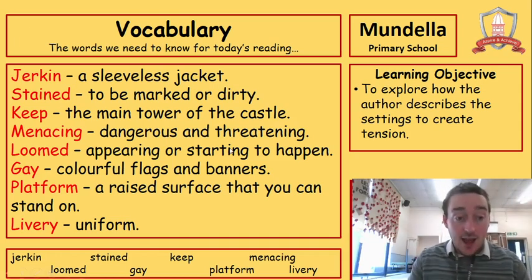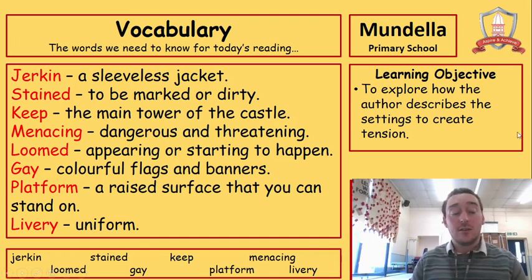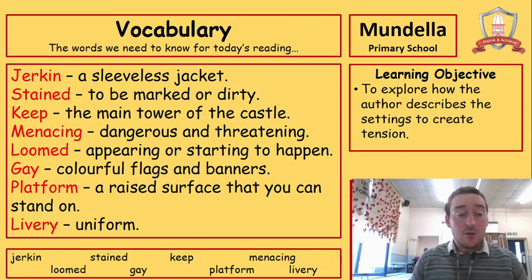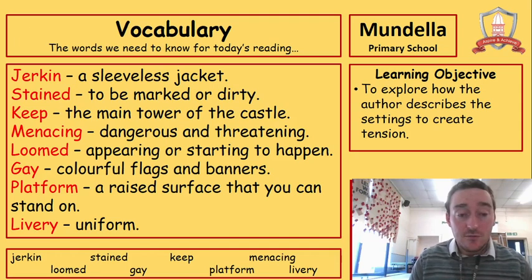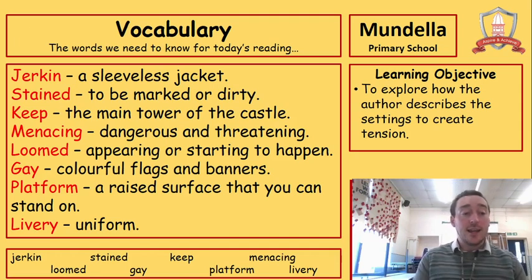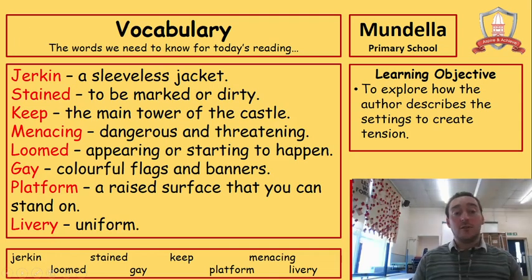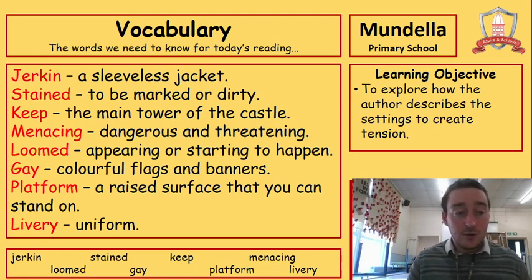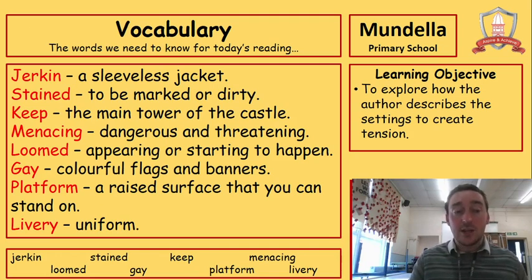Next we have gay, which in this case means colourful flags and banners because they're going to a contest with lots of people. Then we've got platform — a platform is a raised surface that you can stand on. And finally, livery — livery is a uniform. For example, the soldiers were wearing the livery of Gisborne. So lots of words there that are going to appear in the next two pages that we're looking at today.